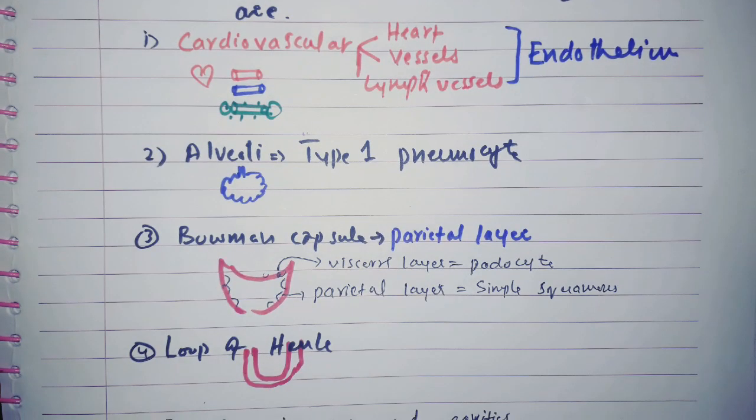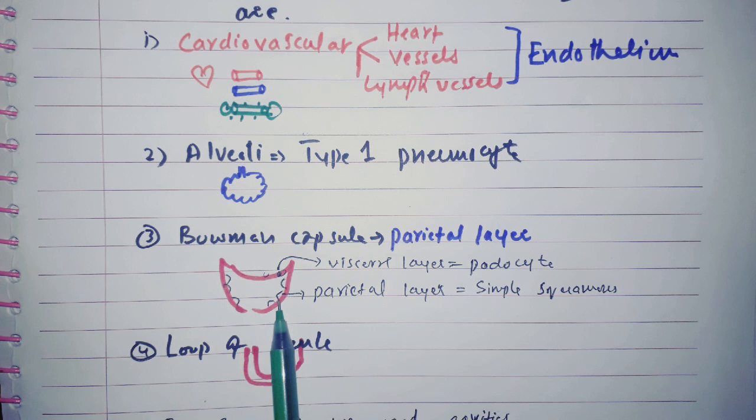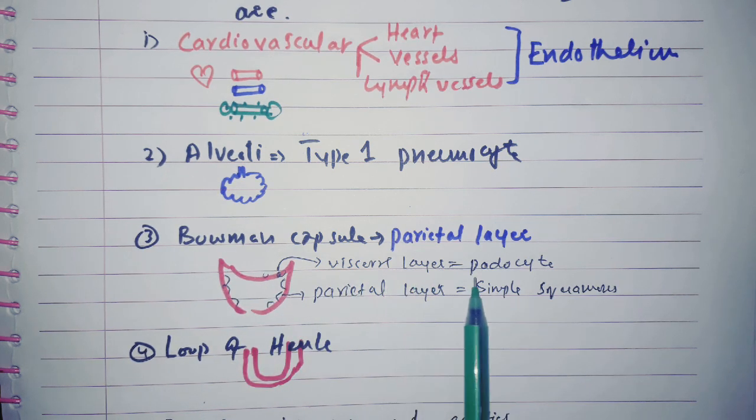Now another area which we can squeeze is like Bowman capsule in the kidney. So the Bowman capsule which layer, the Bowman capsule is consisting of the parietal layer and visceral layer. This parietal layer is actually the simple squamous epithelium. The visceral layer we are having podocytes here.